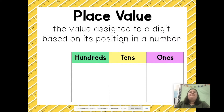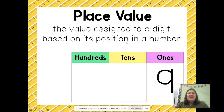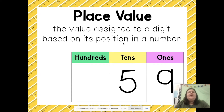Place value is the value assigned to a digit based on its position in a number. For example, I can place the number nine in the ones place, and that nine represents nine ones. I can also place a five in the tens place — that five means the digit five stands for five tens, or fifty.